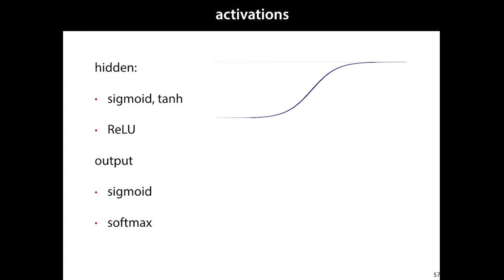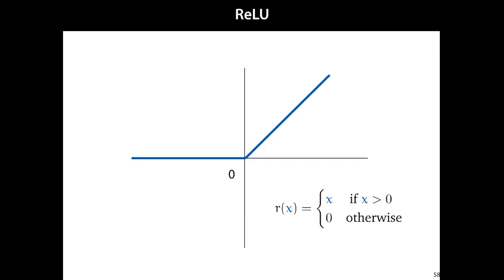Now let's talk about activation functions. It turns out the sigmoid function isn't actually that useful for hidden units. You have vanishing gradient problems when activations get too large or small, and even at the optimum the maximum gradient of sigmoid is only 0.25 — so you're quartering your gradient every time you pass through one. What we use instead is something called a ReLU (rectified linear unit): it's linear if above zero, and clips everything to zero below zero. Very simple.